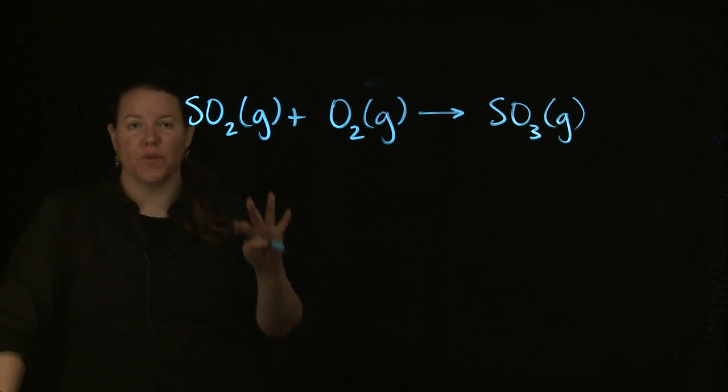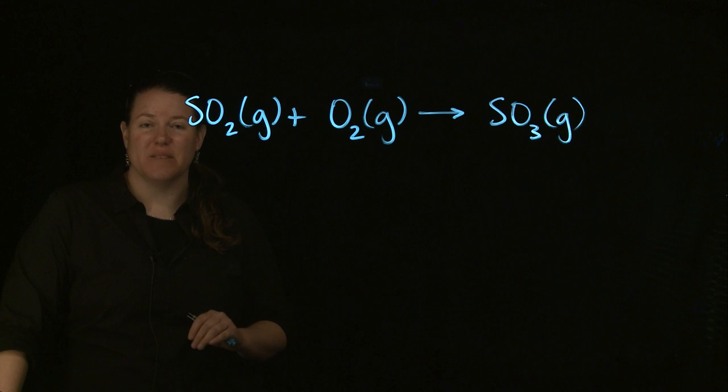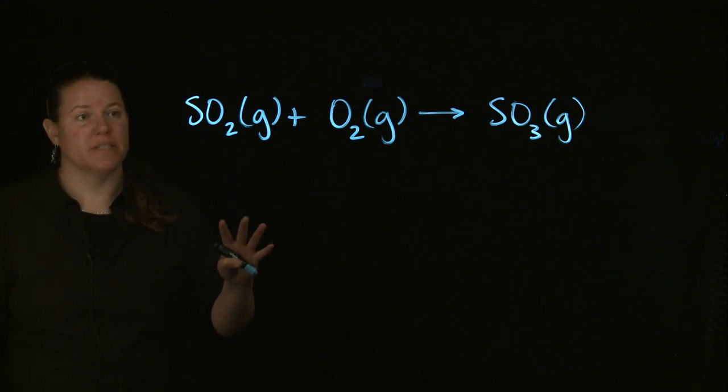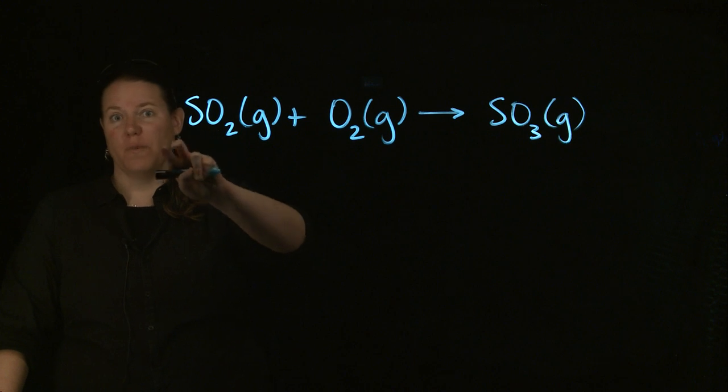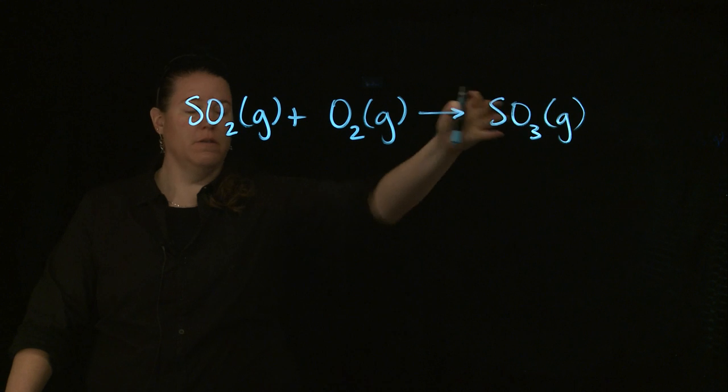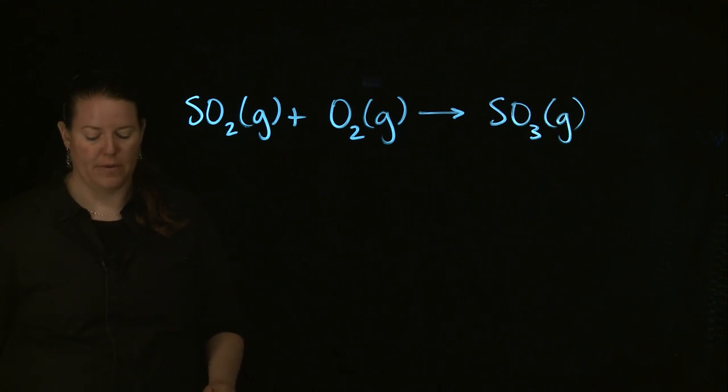It doesn't mean that you have the same number of reactants and products. It doesn't mean you have the same number of molecules or substances, because obviously in terms of molecules you have two different substances on this side of the arrow and one different substance over there. We're looking at the number of atoms of each element.